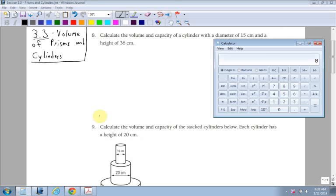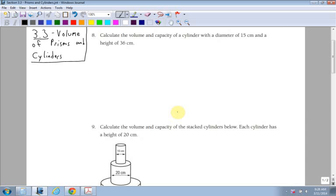Okay, for section 3.3, this is the volume of prisms and cylinders. I'll go over cylinders first and then look at prisms at the end because they're a little bit easier. Typically, when you're looking at volume of any type of shape, it's the area of the base times the height. So in this case, I need to calculate the volume and capacity of a cylinder with a diameter of 15 cm and a height of 36 cm.